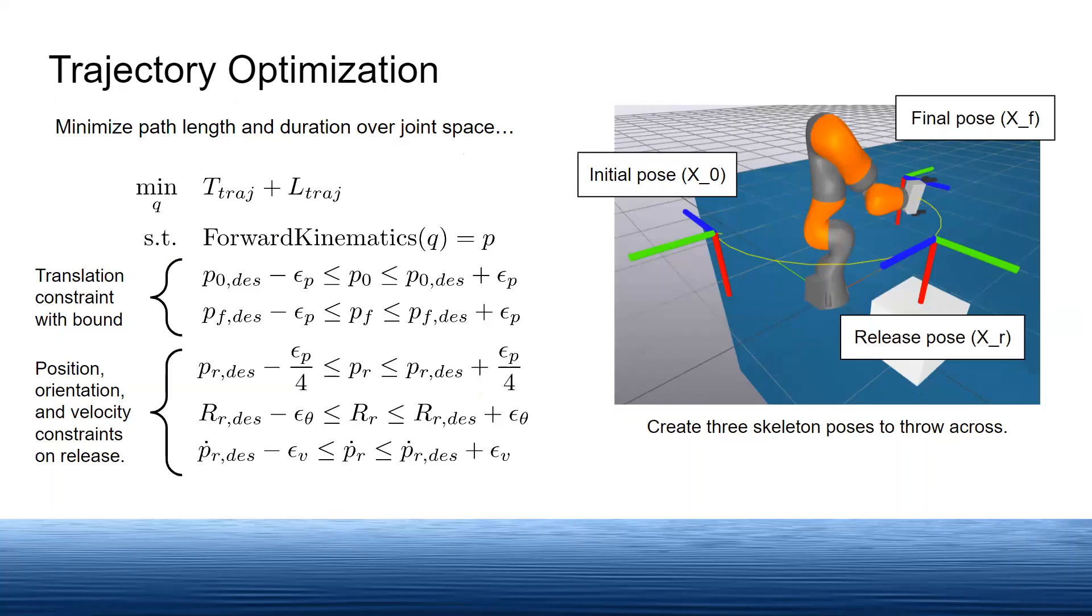Since the release of the rock matters the most when throwing, we added orientation and velocity constraints at this point. In the image, you can see these poses as well as the yellow trajectory line created from the optimization.